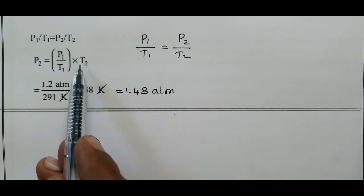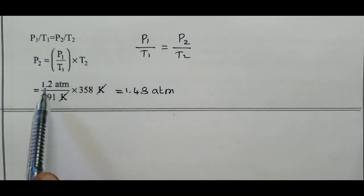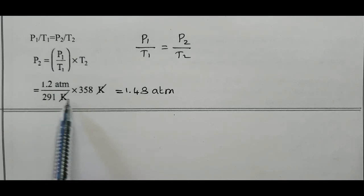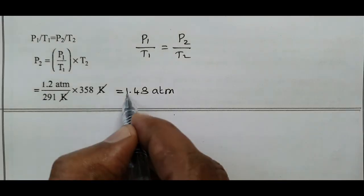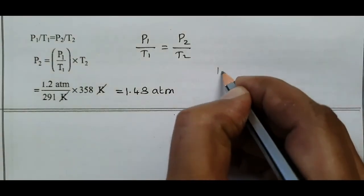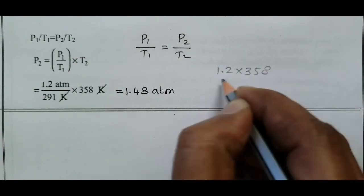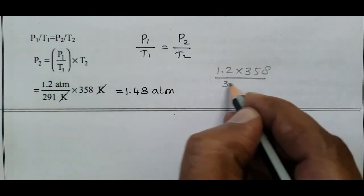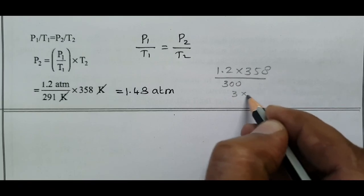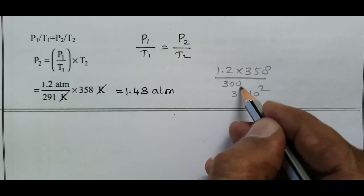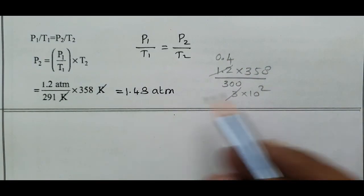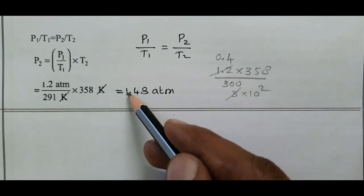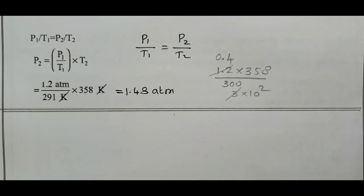We need to find P2. Rearranging: P2 = (P1 × T2) / T1 = (1.2 × 358) / 291. Kelvin units cancel. The answer is approximately 1.48 atm — that is the final pressure. Thank you very much.